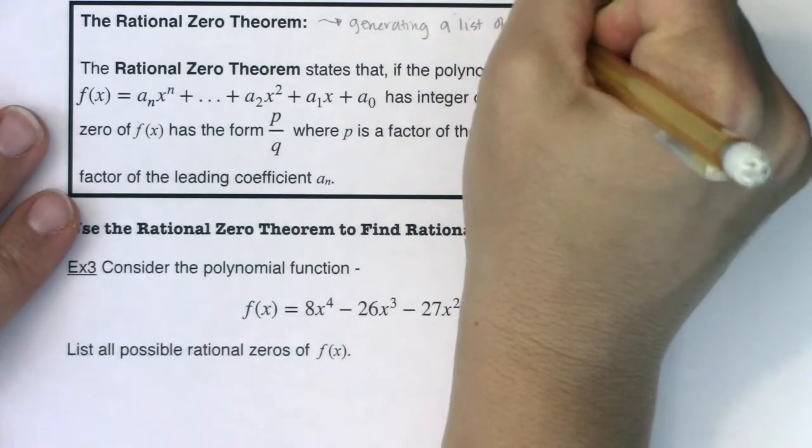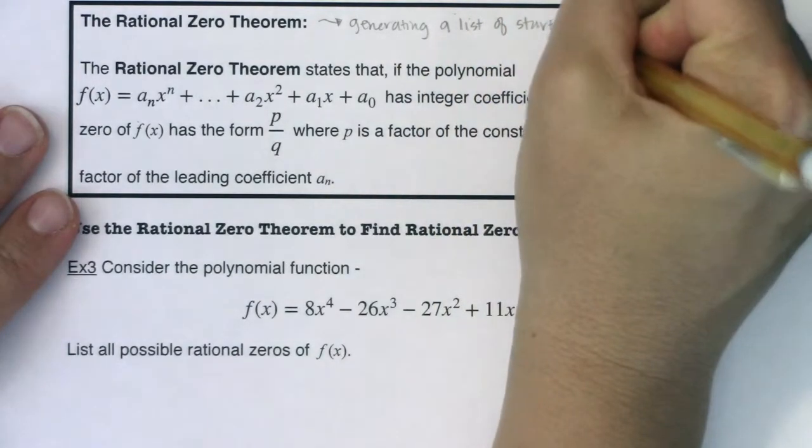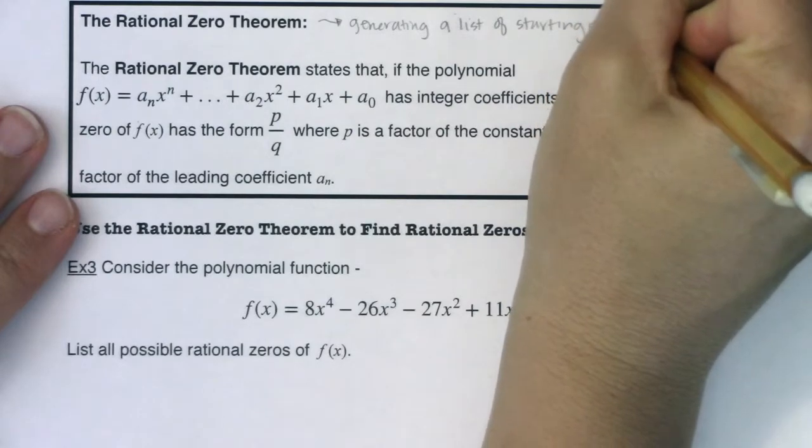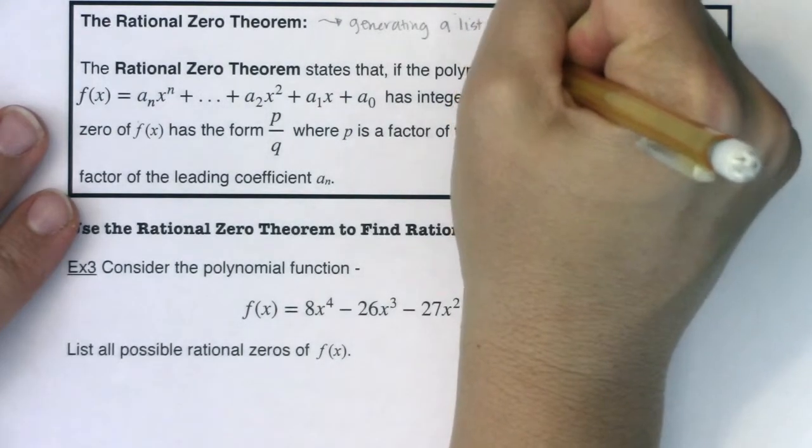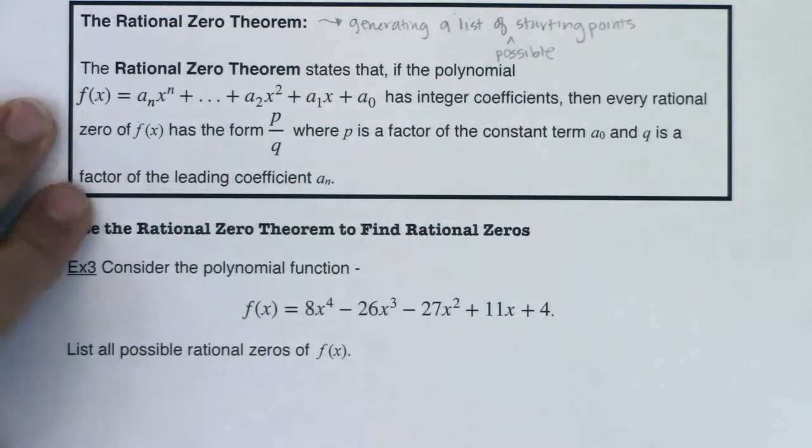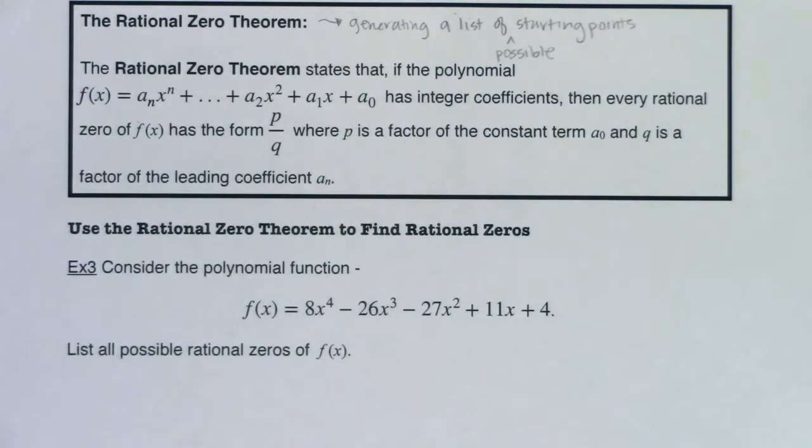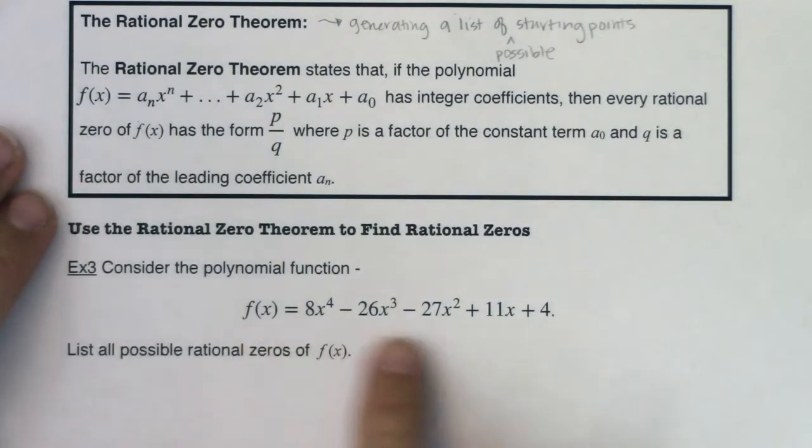a list of starting points, and I'll explain that as I go along. But I want you to hear, it's going to generate a list of starting points, or I should say if I want to be technical, of possible starting points. So if you remember in example two, I started you by saying five is a zero of the function. But what do you do when I don't start you anywhere? Well that means we want to just generate a list of all possible zeros.